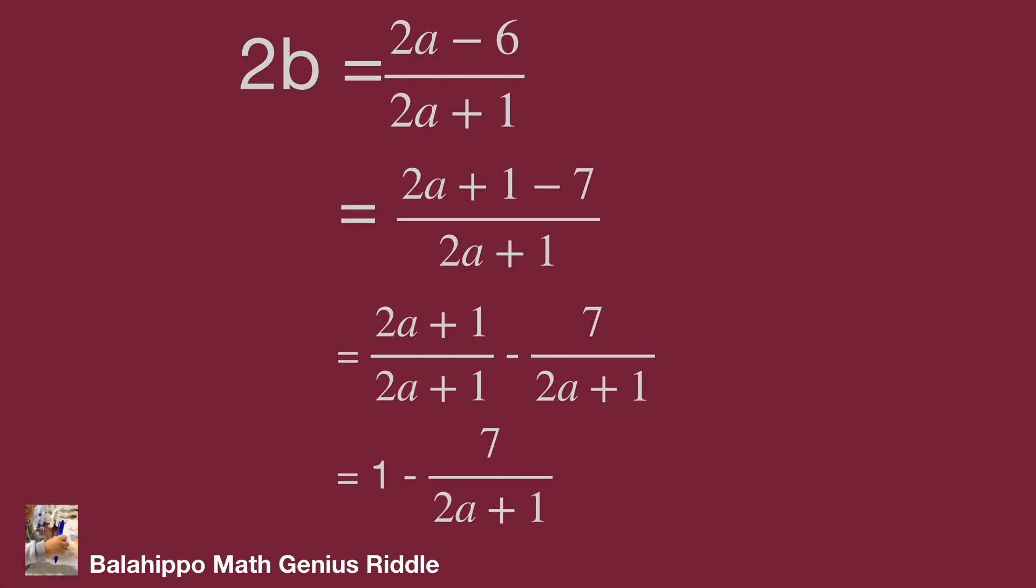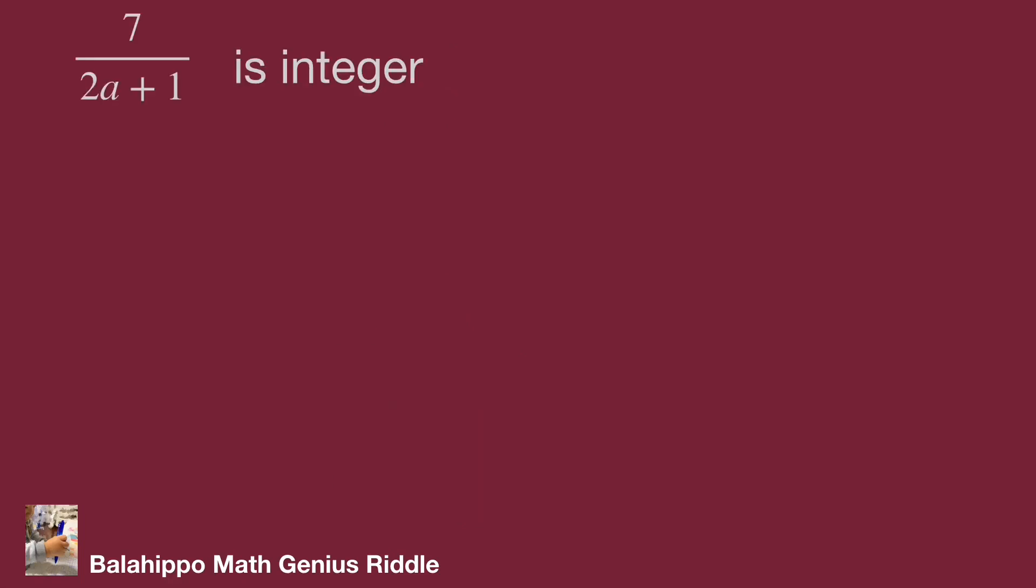So 2b is an integer. We can say 7 over 2a plus 1 is an integer. Therefore, 2a plus 1 must be a factor of 7.